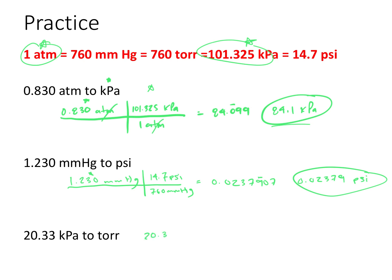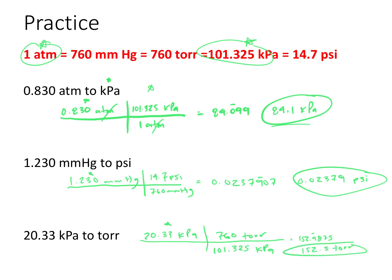For the last problem, we have 20.33 kilopascals to convert to torr. There are 101.325 kilopascals for every 760 torr. Plugging that into the calculator gives 152.4875. With four significant figures, we mark the fourth significant digit and the final answer is 152.5 torr.